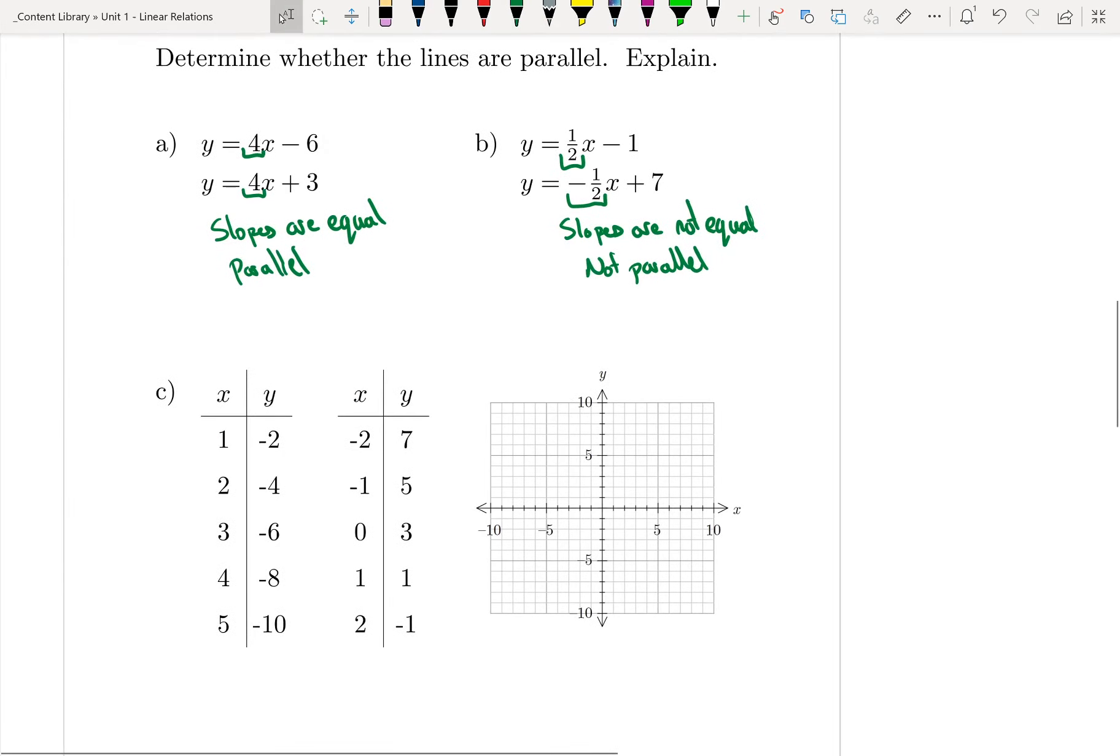In example C, instead of giving two equations, I have two tables of values. So I have line 1, and I have line 2. What I need to do here is I need to determine my rise, or I need to determine the slopes. In order to do that, I need to plot these points on a graph.